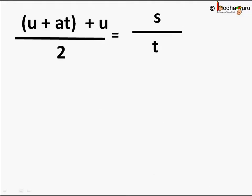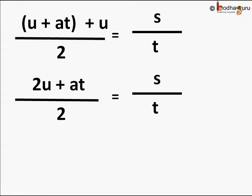We put the value of v is equal to u plus a t on the left hand side to remove v from the equation. So we get u plus a t plus u divided by 2 is equal to s by t. That is 2u plus a t by 2 is equal to s by t.